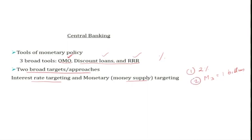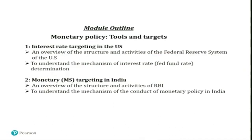Both targets — interest rate targeting and money supply targeting — have the same ultimate aim of monetary policy: to influence the level of liquidity in the economy. We will make a detailed discussion of the pros and cons of both approaches in future sessions. We will also apply these in different country settings to see how they affect the level of liquidity and subsequently the level of economic activity.